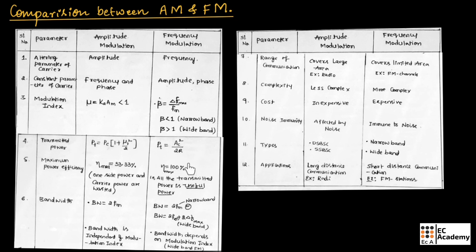The maximum power efficiency of amplitude modulation is 33 percent, and the maximum power efficiency of FM is 100 percent. In AM, efficiency is only 33 percent because one sideband power and the carrier power are wasted. In FM, all the transmitted power is utilized, which is why the efficiency is 100 percent.